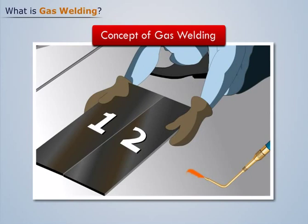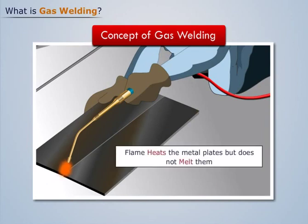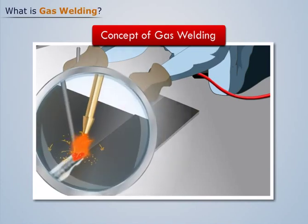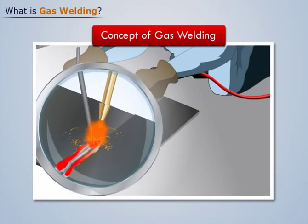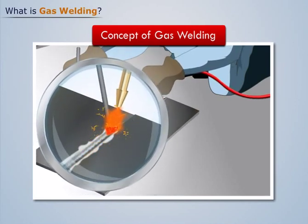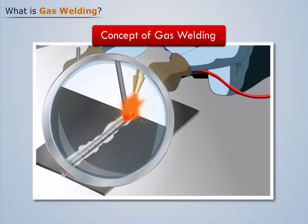Now let us bring the burning torch near the contact interface of the plates such that the flame only heats the metal plates but does not melt them. Now let's introduce a filler rod in the flame. We see that the filler metal melts and gets deposited at the interface, thus creating a weld pool there. Now we move this torch and filler rod along the contact interface, depositing the filler melt all along the contact line.